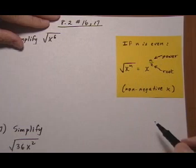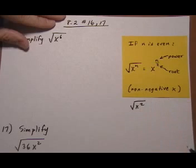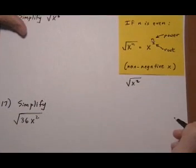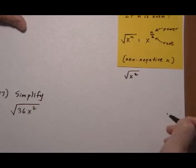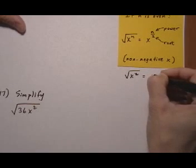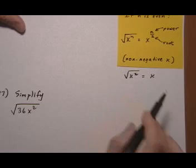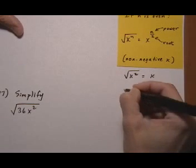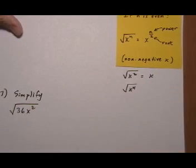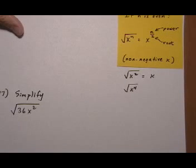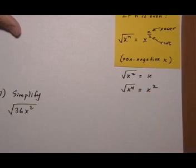Let's look at where that comes from. Let's say we have square root of x squared. The square root of x squared is whatever we multiply by itself to give us x squared. We would multiply x by itself — x times x gives us x squared, so that equals x. If I had x to the fourth, what times itself would give us x to the fourth? That would be x squared times x squared, so the answer is x squared.